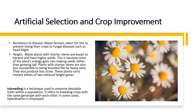Also, farmers select for height. The reason they select for height is that it has been found that maize with shorter stems are easier to harvest and they tend to have higher yields. That's because most of the plant's energy would go into making seeds rather than growing tall. So those plants that have shorter stems are more likely to produce higher yields. So when maize farmers are doing selective breeding, they tend to pick that gene for plant height.